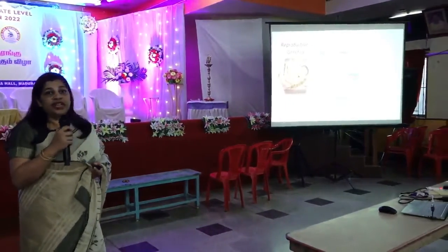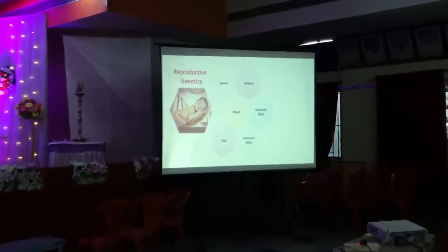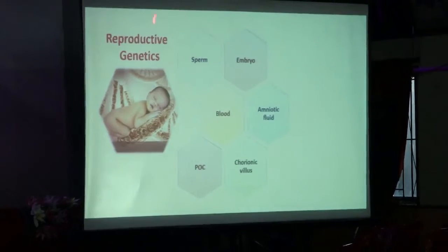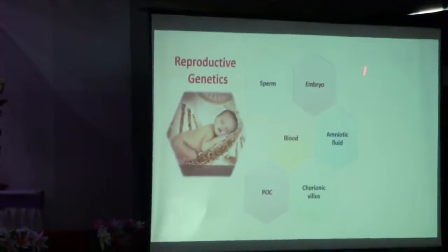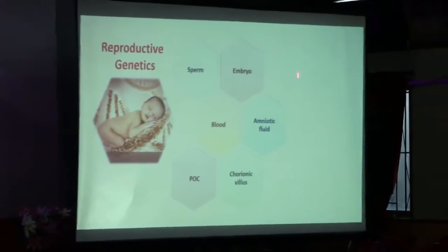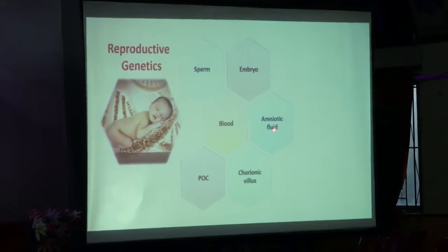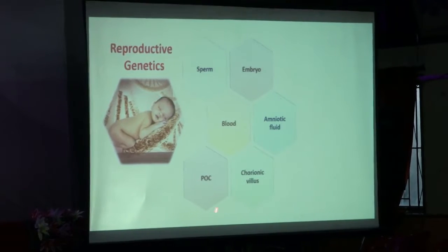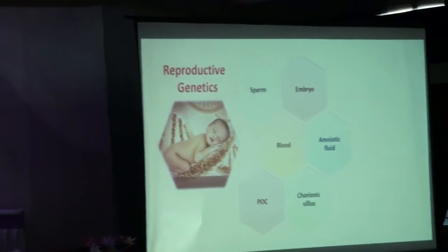For today's topic, I will stick to only reproductive genomics, otherwise it will be a long talk. In mainly reproductive genomics, we perform genetic testing in sperm, embryos, blood samples, amniotic fluids, chorionic villus samples, and what we call product of conception. As I go forward, I will give you details on what all of these samples mean.